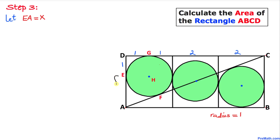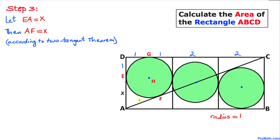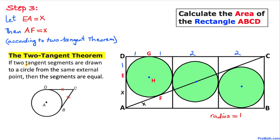In this next step, let me call this line segment EA as x. Then this line segment AF is going to be x as well, according to the two tangent theorem. If two tangent segments are drawn to a circle from the same external point, then the segments are equal in length. Therefore EA and AF are equal in length.